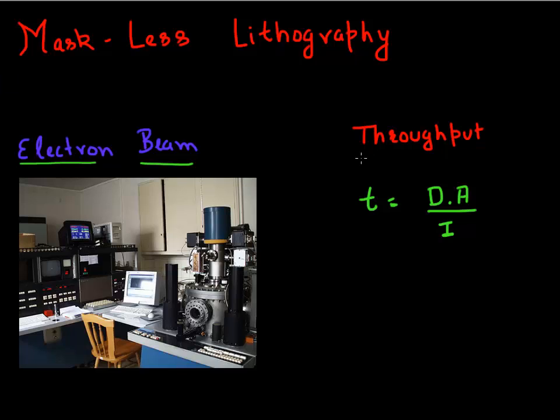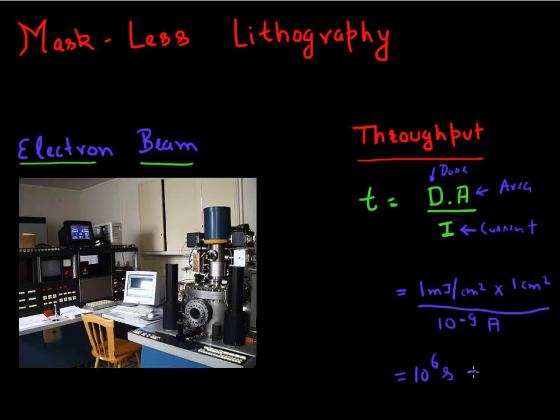But one of the main challenges with this electron beam lithography or mask-less lithography is throughput. So the time it takes to print any feature using this electron beam can be simply described by this formula where the time is essentially proportional to the dose of your resist required, proportional to the area you want to print, and then it's divided by the current of the electron beam that you're using. So let's say you have a dose of one millijoule per centimeter square, and then you want to print area of one centimeter square, and then you have a current of 10 to power minus 9 ampere or one nanoampere. So if you take all these numbers, how much time will it take to print? It turns out it will take you 10 to power 6 seconds to print this, which is equivalent to 12 days to print this one centimeter square of area.